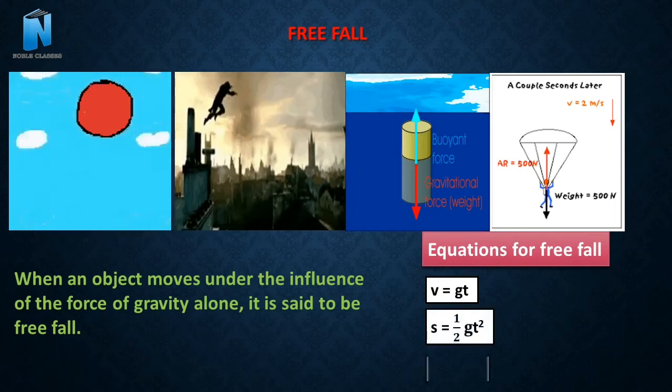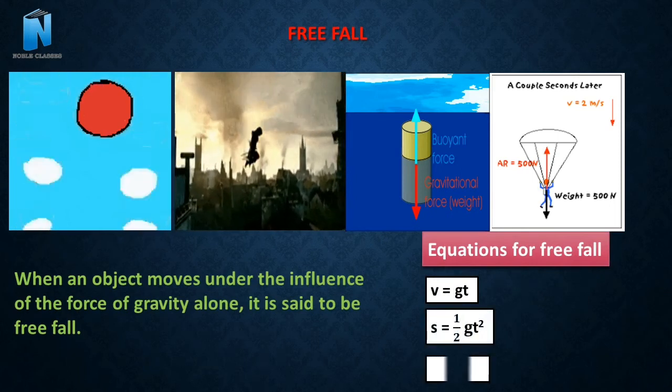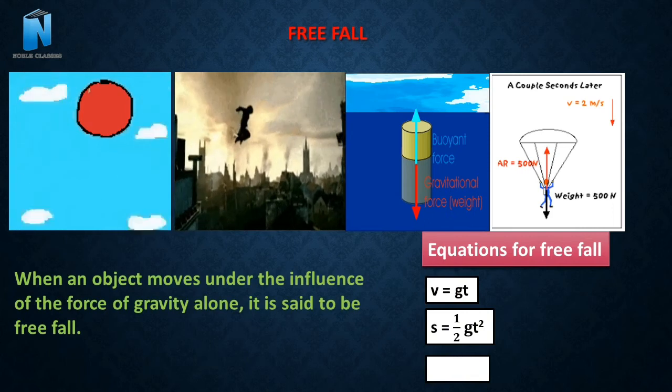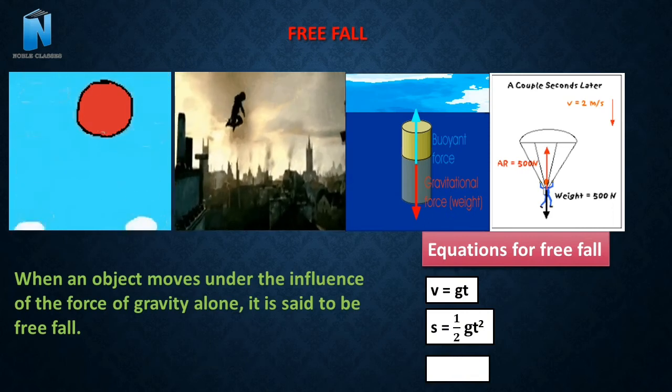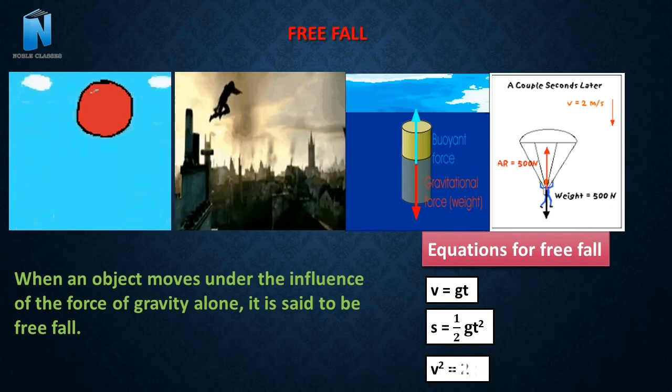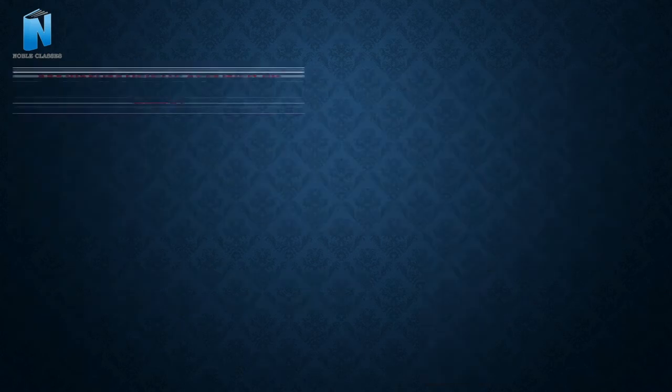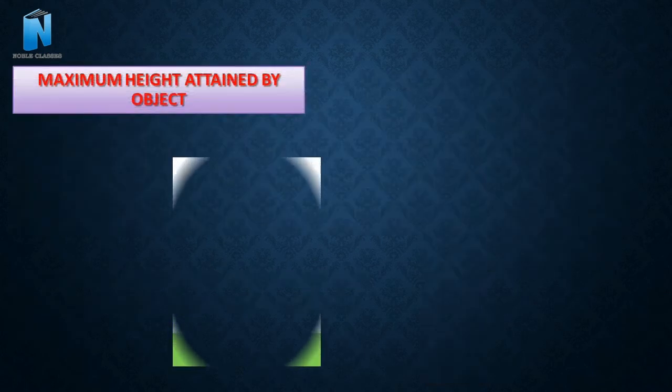We have three equations. The first is V is equal to G T. Second is S is equal to half G T square. Third is V square is equal to 2 G S. These are the three equations which we will be using in the numerical.